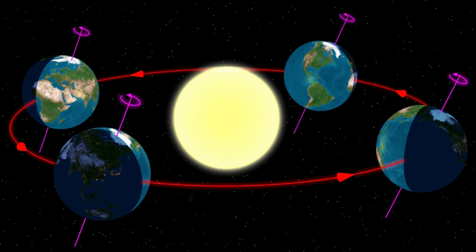Since the Sun constitutes 99.76% of the mass of the Sun-Earth system, the center of the orbit is extremely close to the center of the Sun.